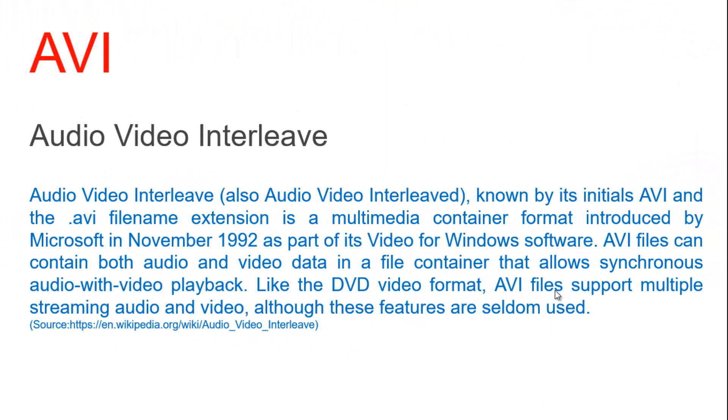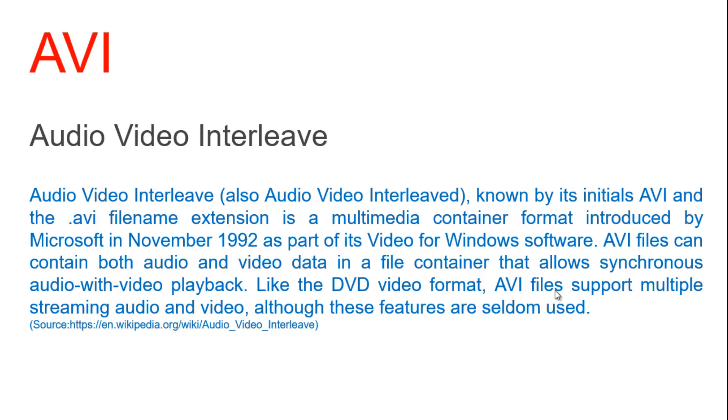AVI stands for Audio Video Interleave, also known as Audio Video Interleaved. Known by its file name extension .avi, it is a multimedia container format introduced by Microsoft in November 1992 as part of its Video for Windows software. AVI files can contain both audio and video data in a container that allows synchronous audio with video playback. Like DVD video formats, AVI files support multiple streaming audio and video, although these features are seldom used.